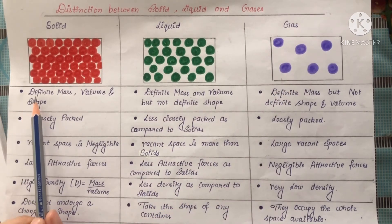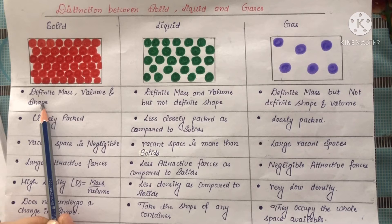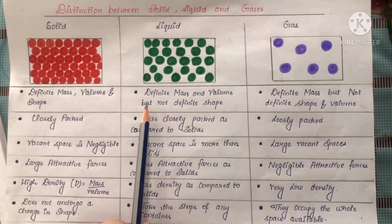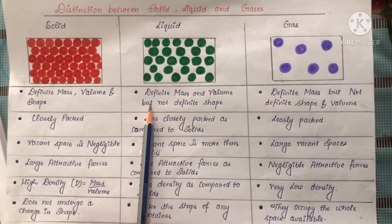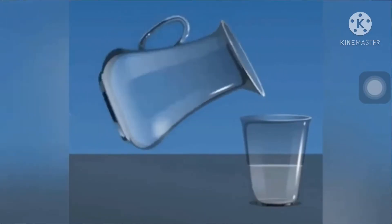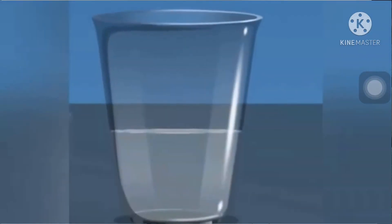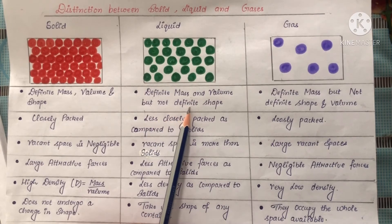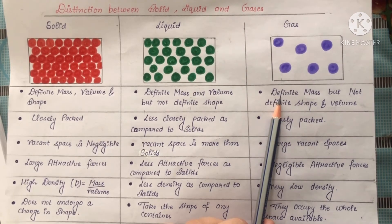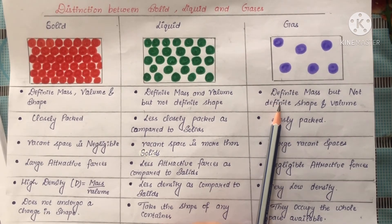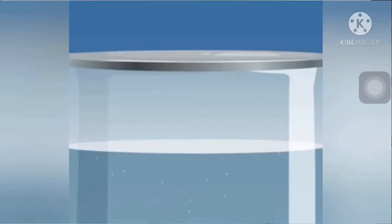The first point is solids have definite mass, volume and shape. In case of liquids, they have definite mass and volume, but do not have definite shape. Because when we pour the liquid in any container, it can attain the shape of that container, so that is why it does not have any definite shape. In case of gases, they have definite mass, but do not have definite shape and volume, because gas occupies the whole space that is available near it.